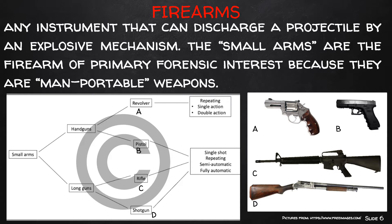Firearms can be classified based on their characteristics of operation, including those designed primarily for one-handed use, like handguns, or two-handed use, like long guns. Modern handguns are primarily comprised of semi-automatic pistols and revolvers, while long guns include rifles and shotguns. All these weapons are included in the so-called small arms category — the weapons of primary forensic interest because they are the main portable weapons.